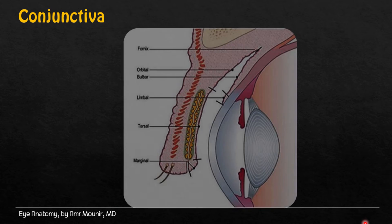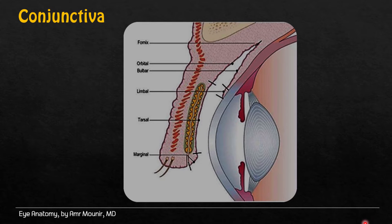Conjunctiva covers the inner surface of the upper lid, then reflects and forms the superior phonics and the inferior phonics in the lower lid, and then forms the bulbar conjunctiva, which is the part of the conjunctiva that covers the globe.